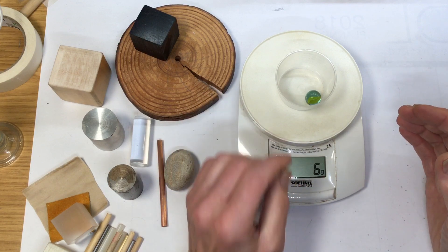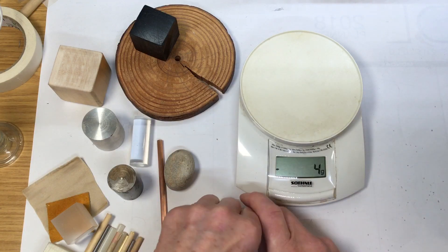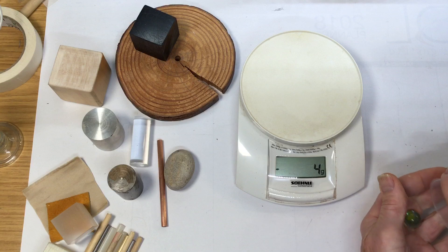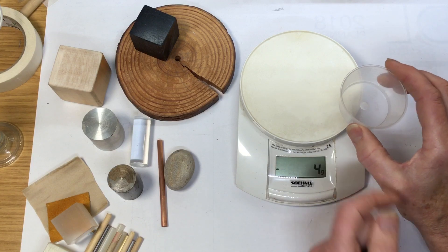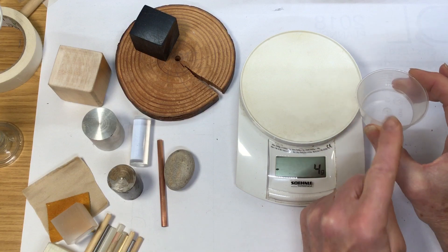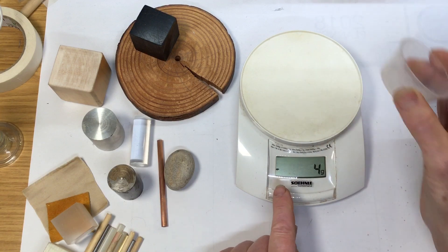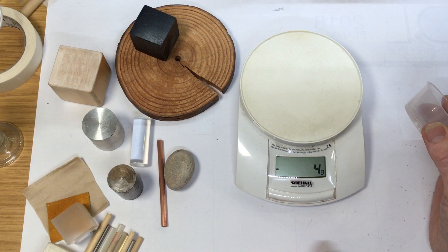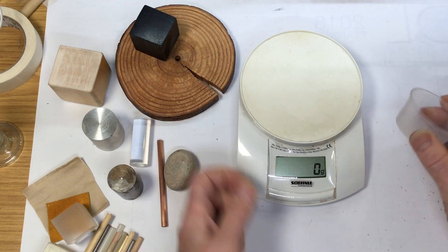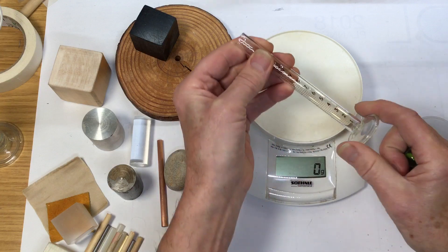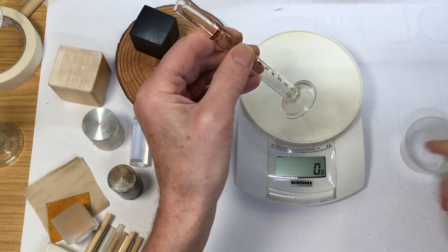Similarly with liquid - look at that, minus four grams, because we had previously used the tare function to zero the balance. Now we've taken it off, it's showing minus a mass of four grams. Let's just tare it again - back to zero.